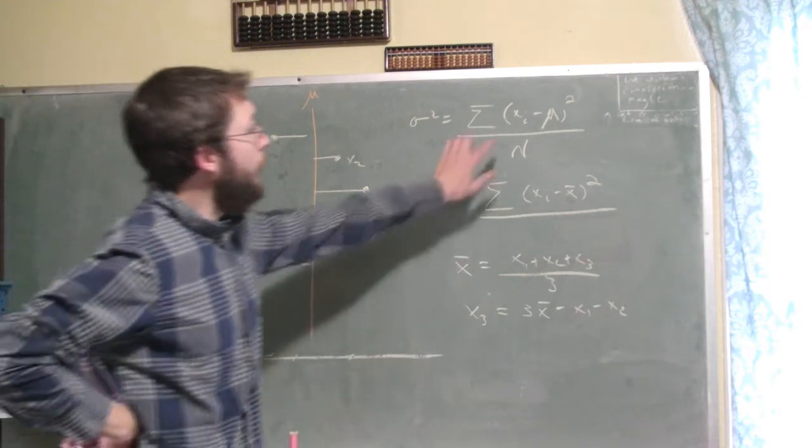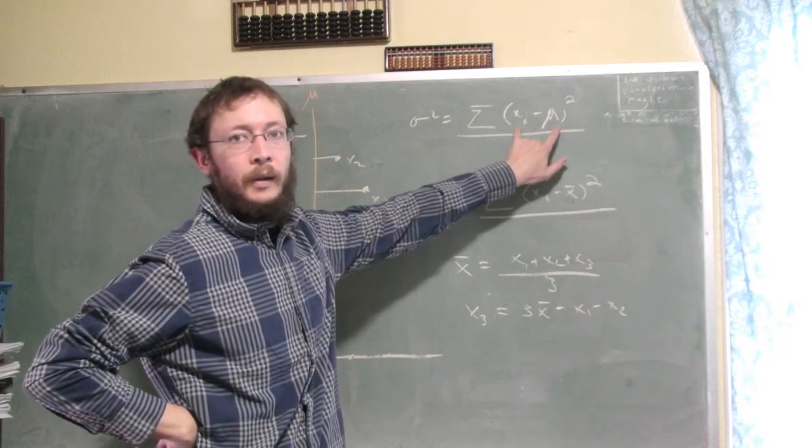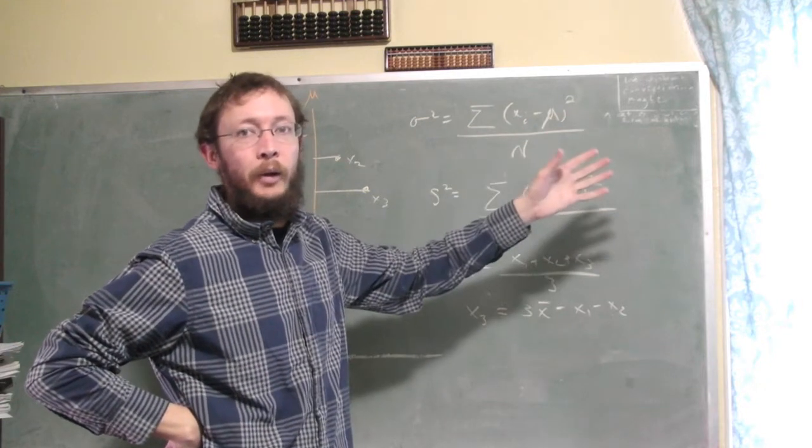So what we do instead is we say, I'm going to take the value minus the mean, that's the signed distance, and then I'm going to square it, and that gives me all positives.